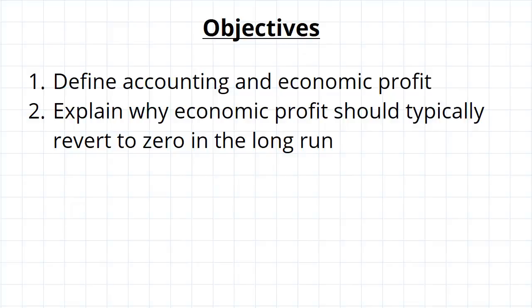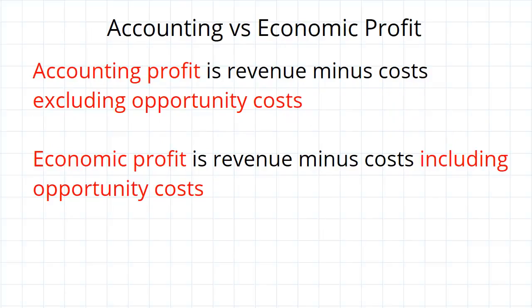G'day guys. One more thing that's important for us to look at is the distinction between accounting and economic profit, and why economic profit actually tends towards zero in the long run. The definitions for accounting and economic profit are given below. Accounting profit is really the one that everybody thinks of when they hear the term profit — it's revenue in dollar terms minus costs, explicit costs in dollar terms, excluding opportunity cost, and that's extremely important.